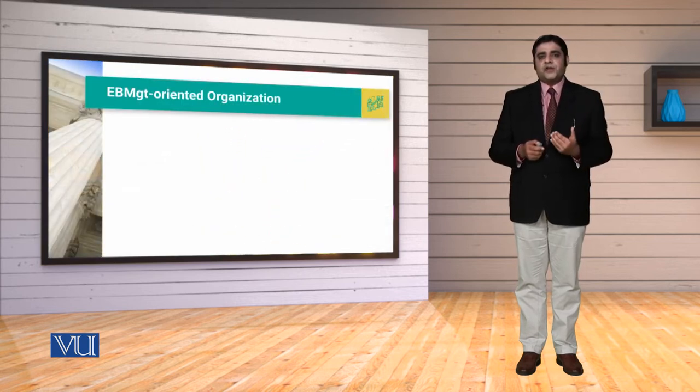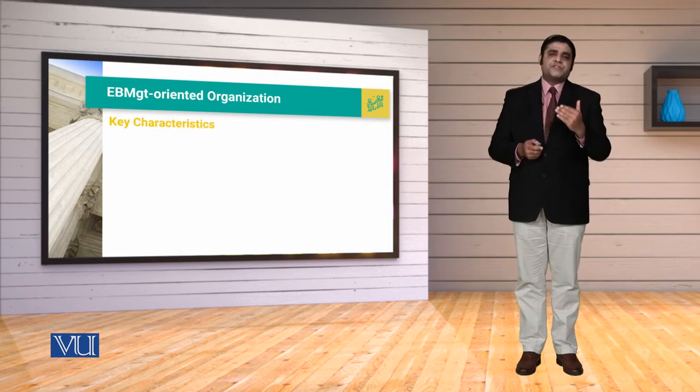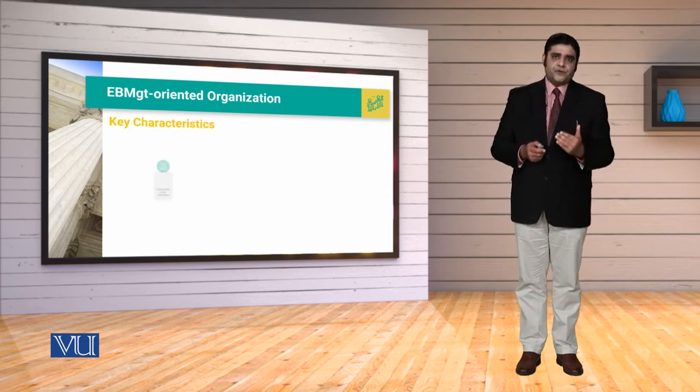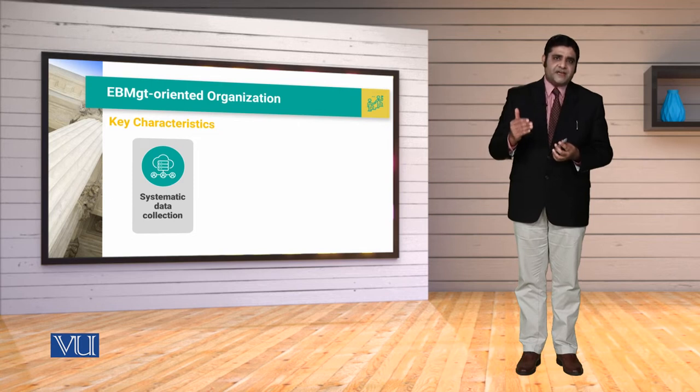The second thing is the key characteristics of evidence-based organizations. سب سے پہلی key characteristic یہ ہوگی کہ ہم systematic data collect کریں — ایسا data جو rationality پر based ہو، جس کے پاس facts and figures available ہوں، historical records available ہوں، تاکہ ہم systematically چیزوں کو analyze کریں اور decision making اور innovation کے لیے ایک concrete solution حاصل ہو۔